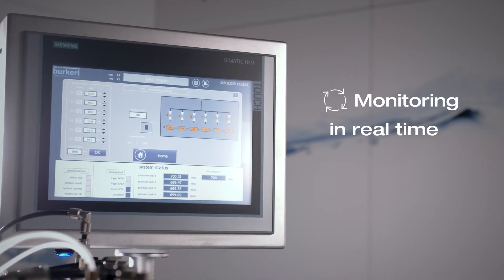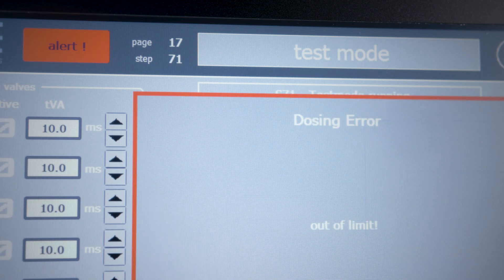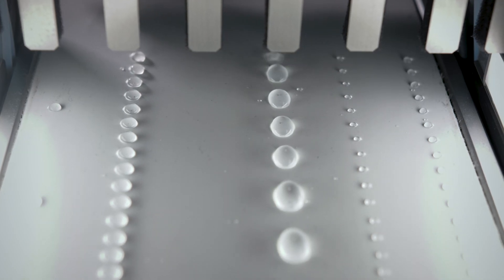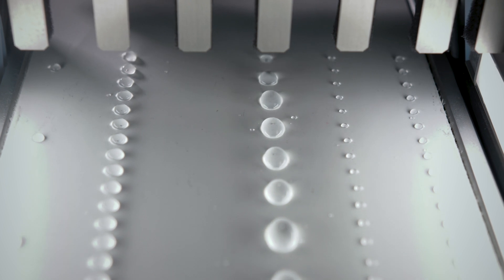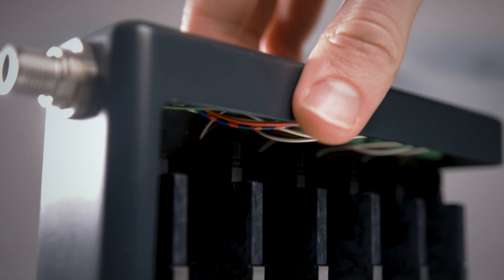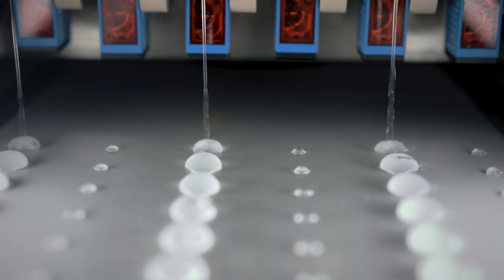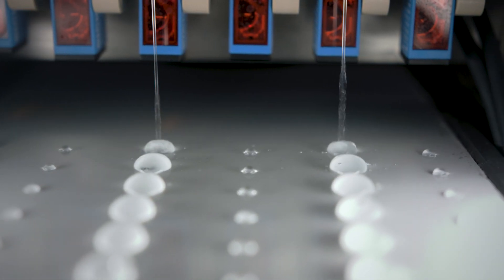In order to permanently monitor the process, the switching point can be detected in real-time and an error can be immediately displayed by the digital communication interface. This way, for example, valves can be replaced directly, sparing you the time and resource-consuming production of faulty oligonucleotides.